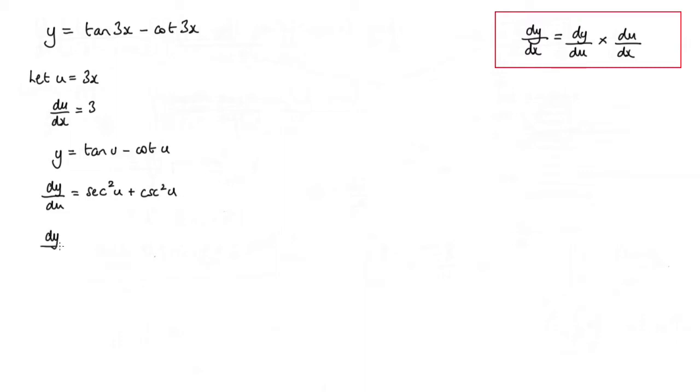So we want to find dy by dx, and dy by dx by the chain rule is dy by du times du by dx. So dy by du is sec squared u plus cosec squared u, and that's times by du by dx which is 3.